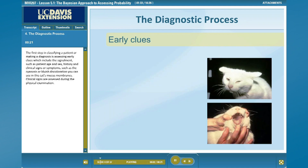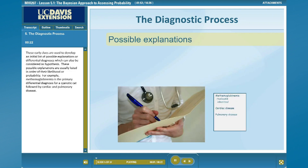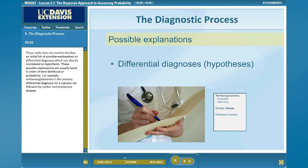The first step in classifying a patient or making a diagnosis is assessing early clues, which include the signalment — such as patient age and sex — history, and clinical signs or symptoms, such as the cyanosis or bluish discoloration you can see in this cat's mucous membranes. Clinical signs are assessed during the physical examination. These early clues are used to develop an initial list of possible explanations or differential diagnoses, which can also be considered as hypotheses, usually listed in order of their likelihood. For example, methemoglobinemia is the primary differential diagnosis for a cyanotic cat, followed by cardiac and pulmonary disease.